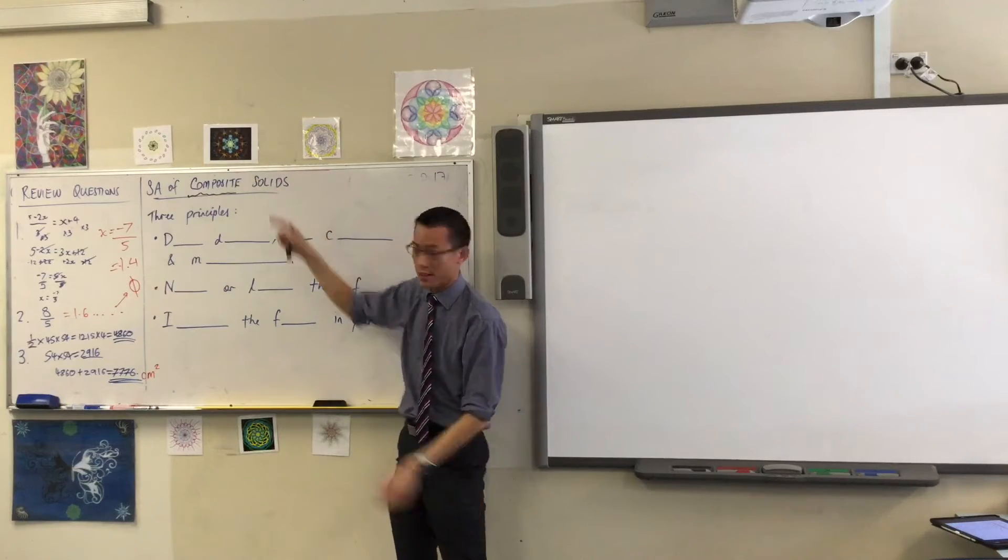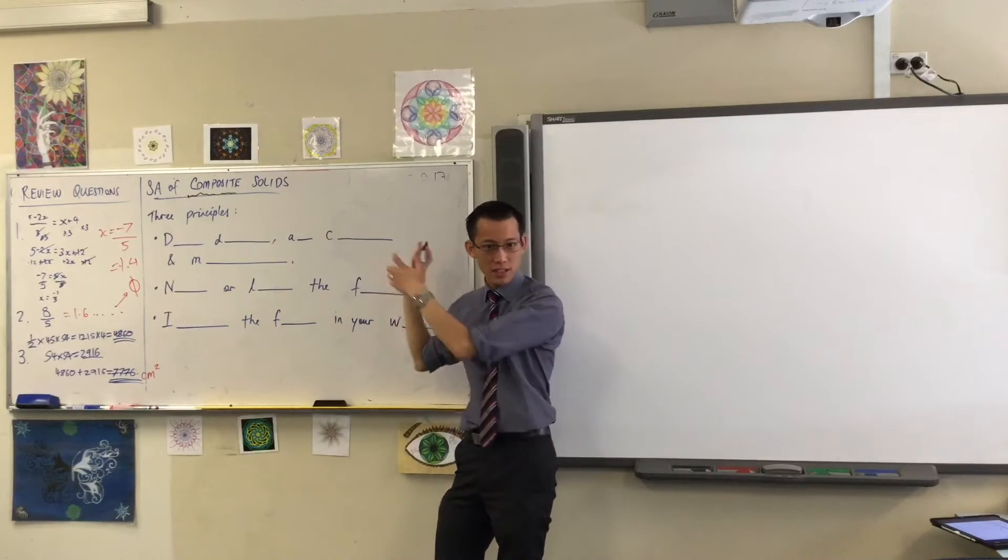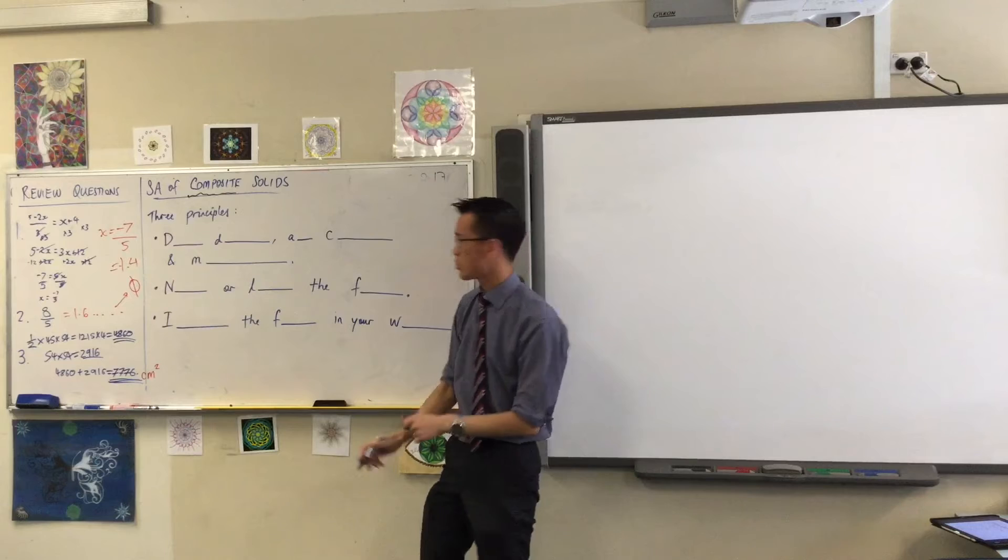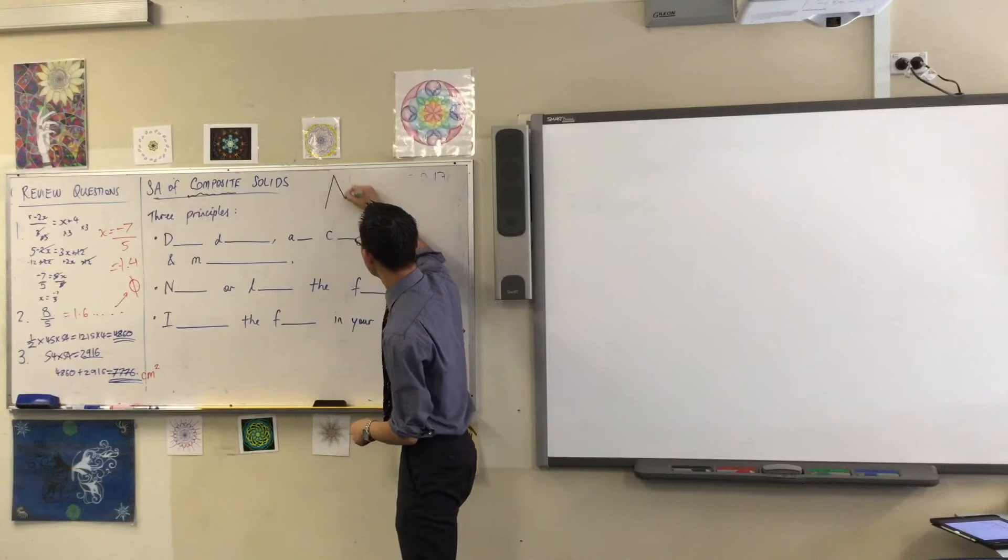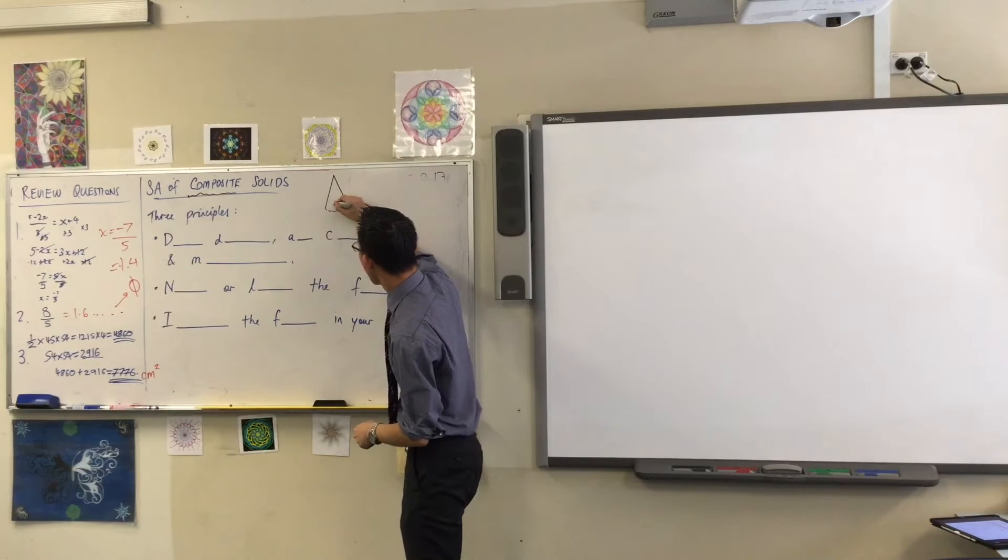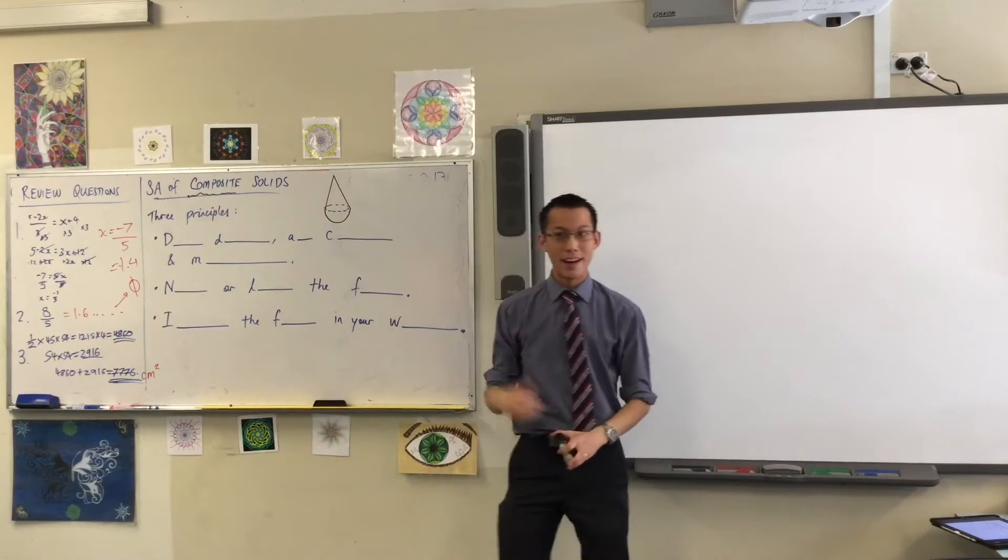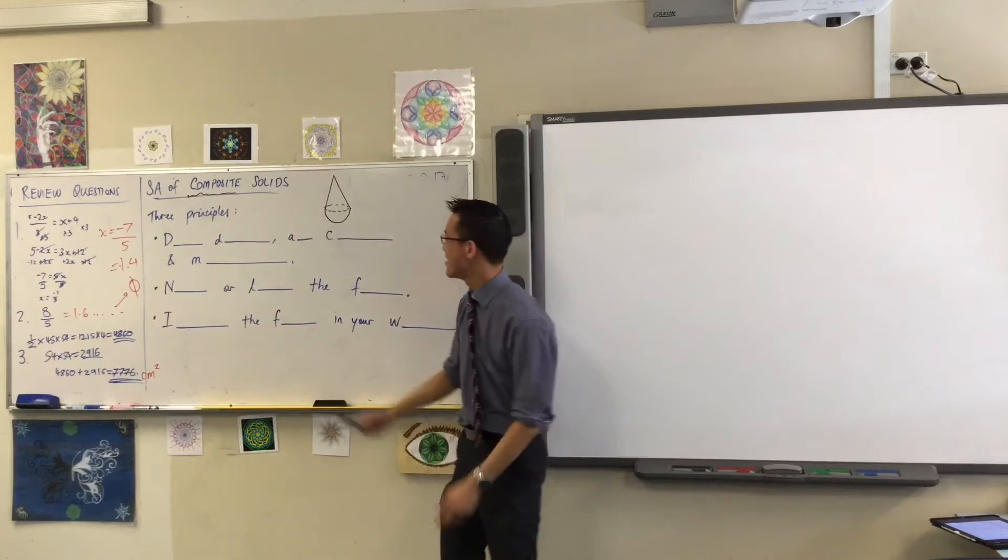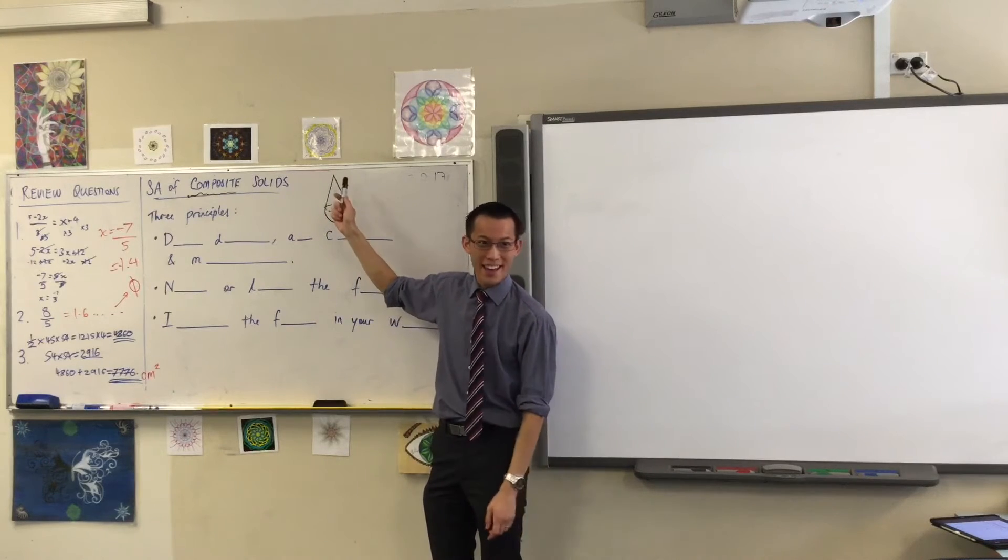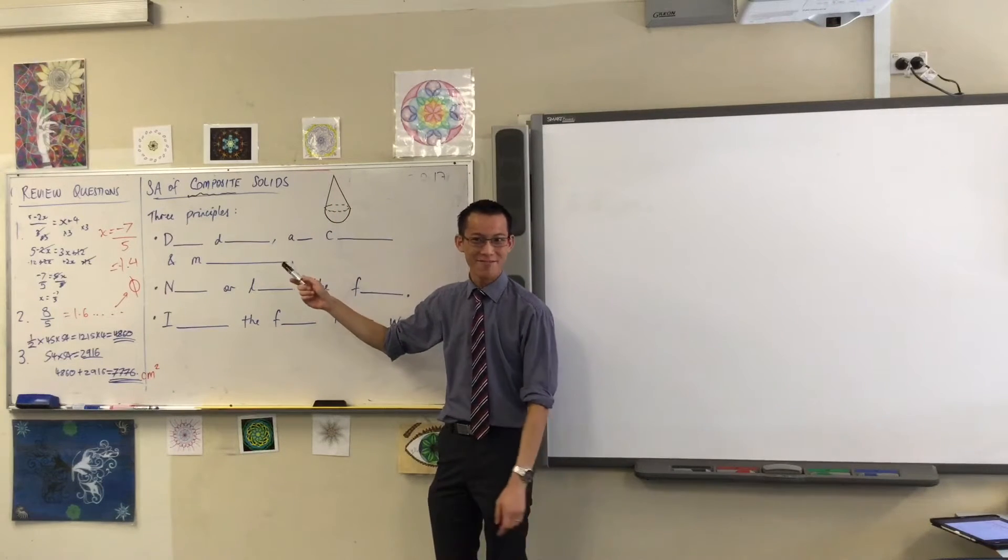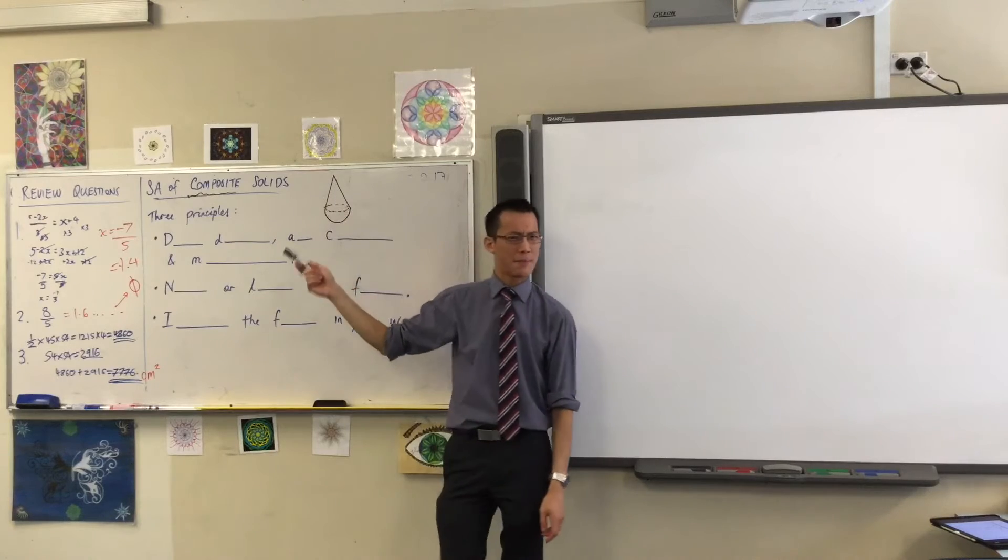When we're talking about composite solids, maybe you want to draw one of these next to where you've got your working here. It only has to be small, things like say this. Here's a, actually I drew it upside down. Here's an ice cream cone, right? So you've got the waffle there and then you've got the ice cream. This is a cone and hemisphere put together, yeah.